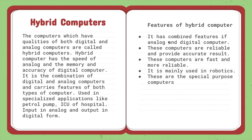For example, to take the vitals of a patient in an ICU, the pulses are in analog form and the monitor displays them in digital form. Features of hybrid computers: they have combined features of analog and digital computers, are reliable and provide accurate results, are fast and more reliable. Hybrid computers are mainly used in robotics and are special purpose computers.